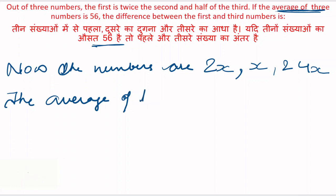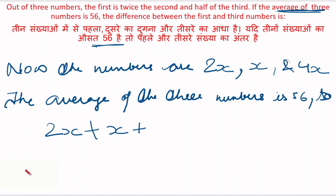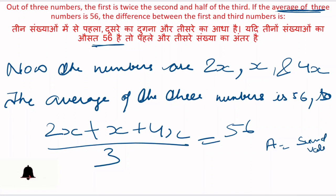The average of the three numbers is 56. So kya kya nikala humne? First number 2x, second number x, third number 4x. Average kya hota hai? Sum of values divided by number of values. So yaha sum of values kya hoga? 2x plus x plus 4x, divided by 3, equal to 56.